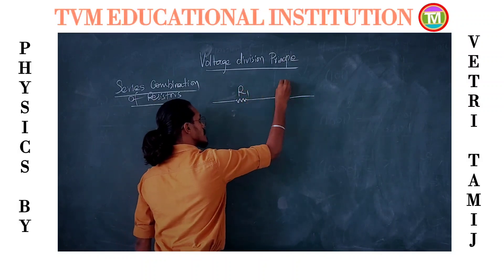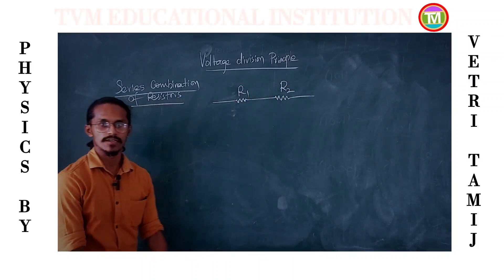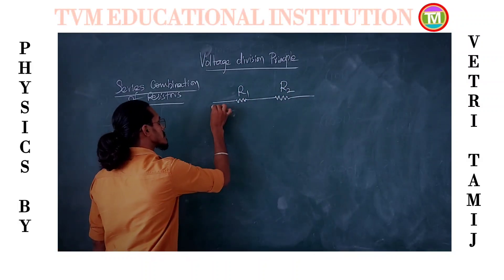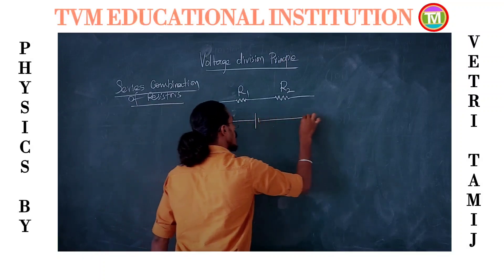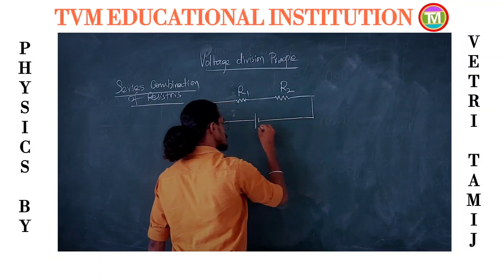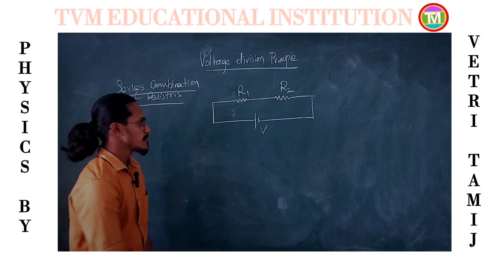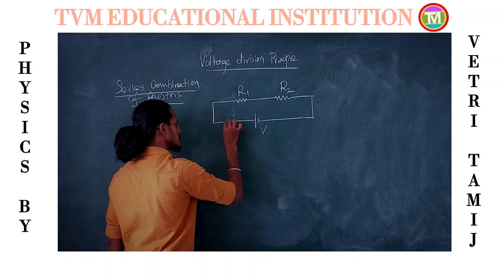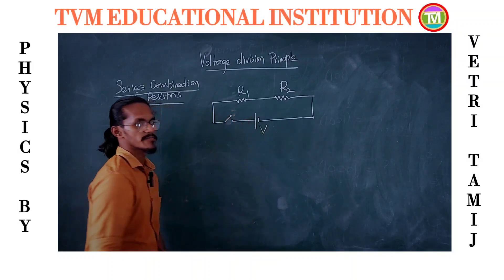One resistor of resistance R1 and another one of resistance R2. It is connected to a voltage source of V volts.